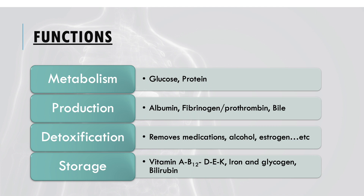Bile is produced by the liver and serves to break down fats; it is stored in the gallbladder. Also note bilirubin, which comes from the breakdown of erythrocytes and is excreted within bile. If any liver abnormality occurs and bilirubin is not excreted, this will result in jaundice, clay-colored stool, and dark urine. The liver is also vital for detoxification of substances such as medications like Tylenol, which can cause liver toxicity.